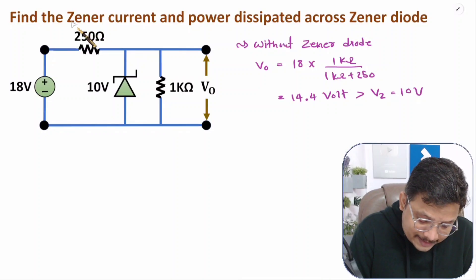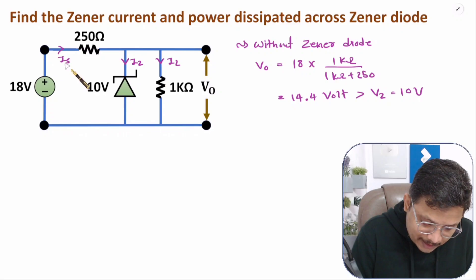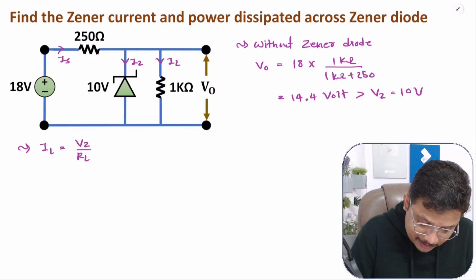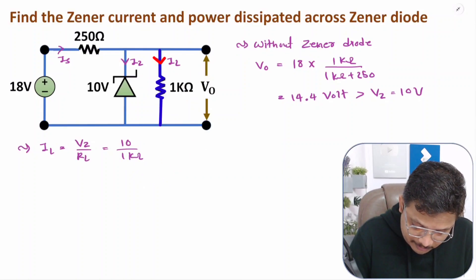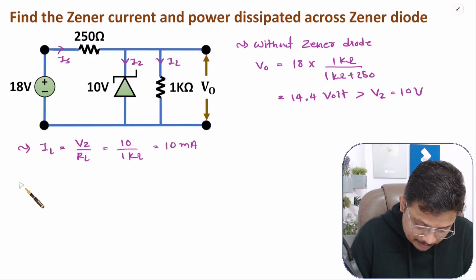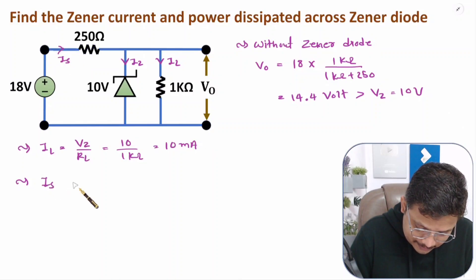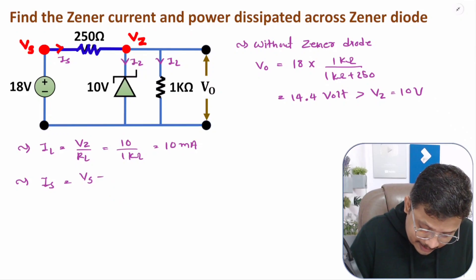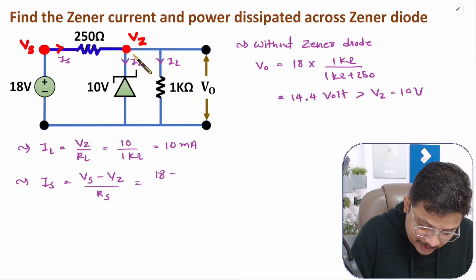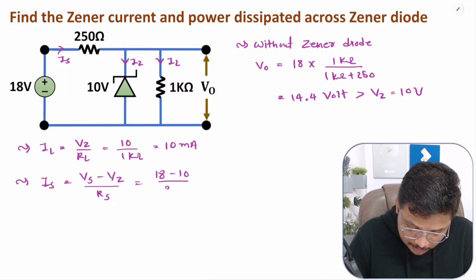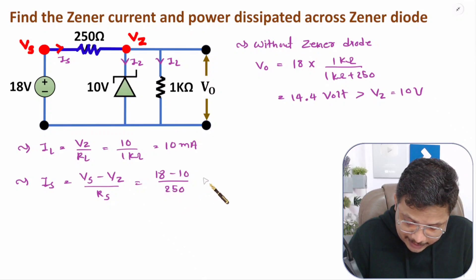To find Zener current, first calculate load current: IL equals Vz divided by RL equals 10V divided by 1kΩ equals 10 milliamperes. Then calculate source current: IS equals (Vs minus Vz) divided by RS equals (18 minus 10) divided by 250 equals 8 divided by 250 equals 32 milliamperes.